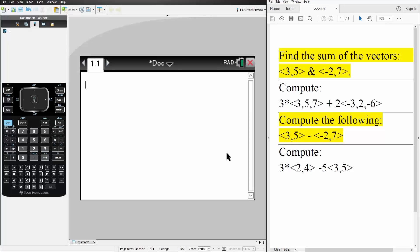Okay, in this video we will go over vector addition and vector subtraction using the TI-Inspire. So we want to find the sum of the vectors 3, 5 and vector negative 2, 7. It's the sum, so it's addition.